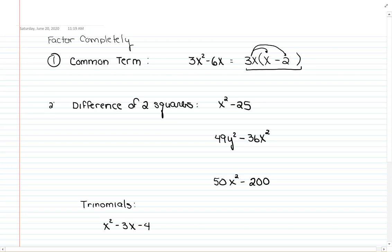The second type of factoring that we'll take a look at is the difference or the subtraction of two squares. So it's got to be the subtraction of terms that you can take the square root of and come up with a whole number or variable to a whole power. For this one, x² - 25, there's nothing that they have in common.